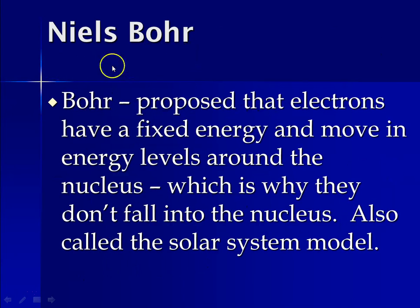The next person we need to talk about is Niels Bohr. He proposed that electrons actually have a fixed energy and that they have to move at fixed locations called energy levels around the nucleus, which is why they don't fall into the nucleus. Also called the solar system model.